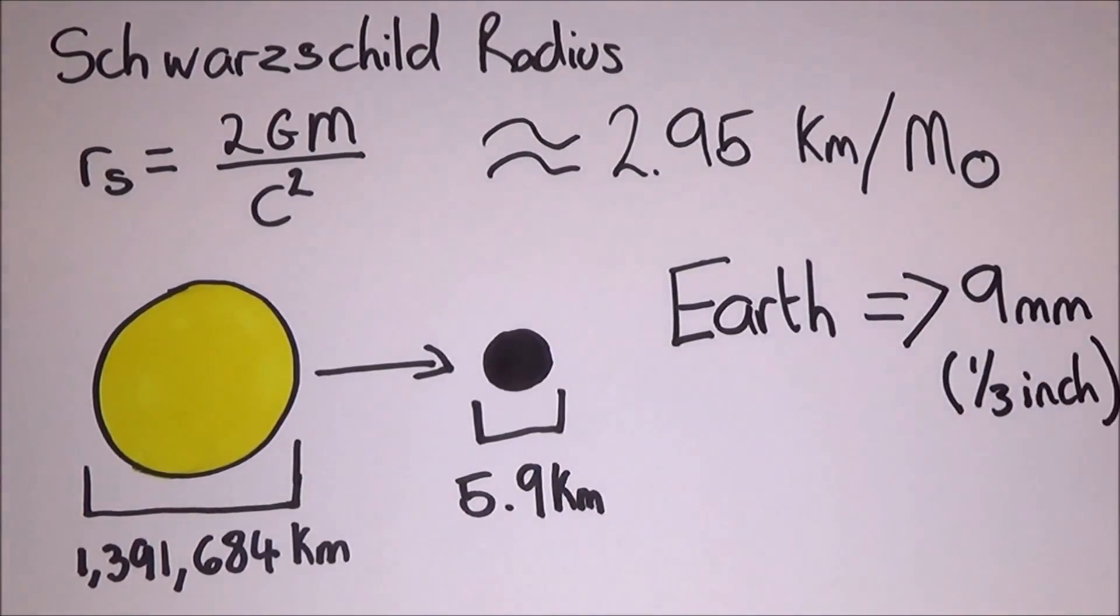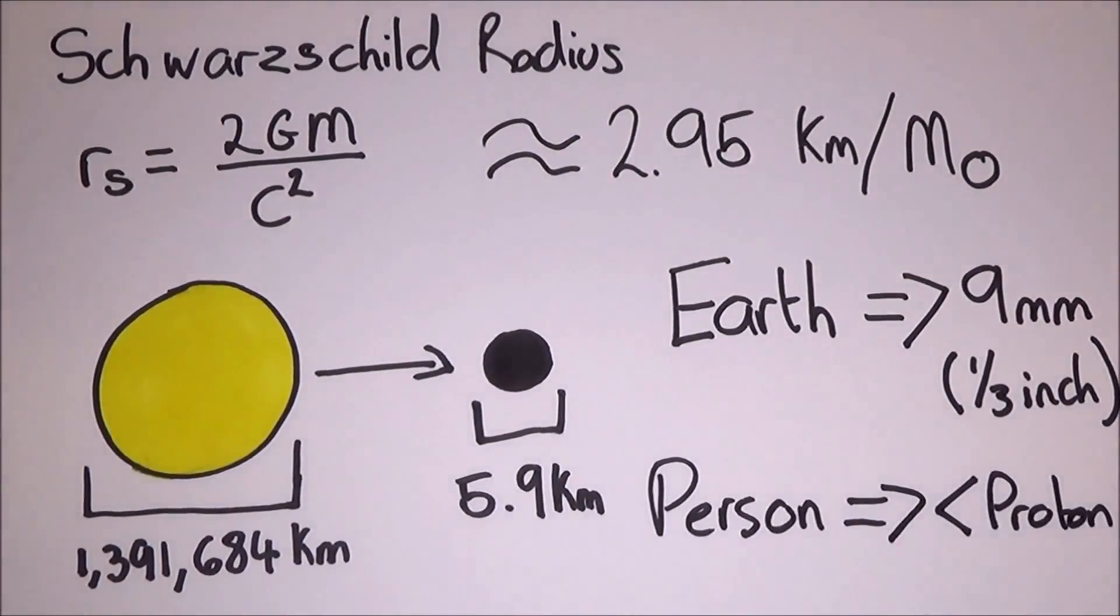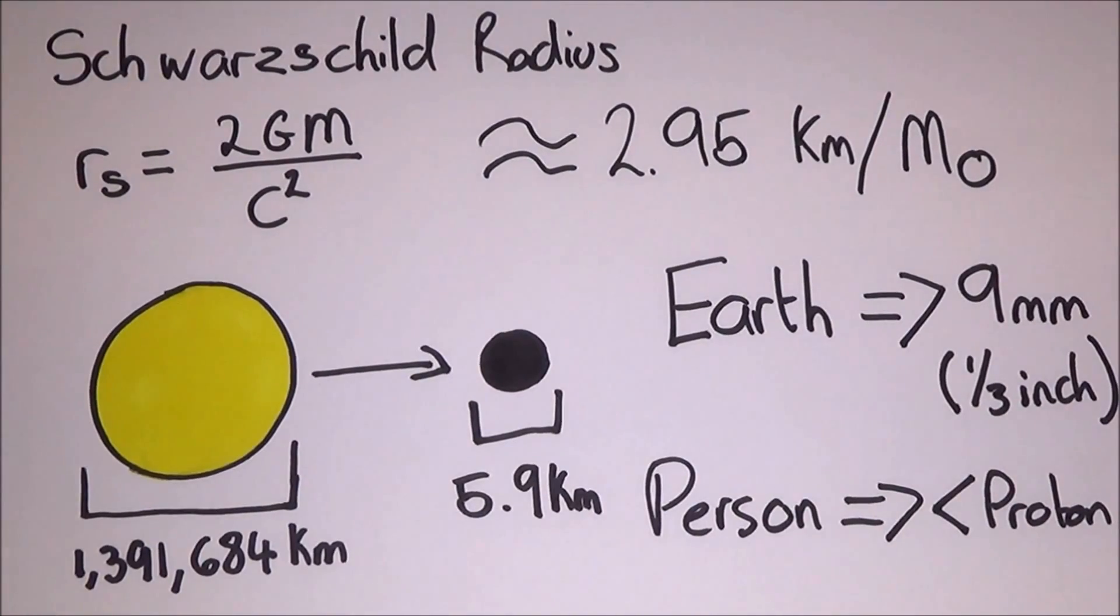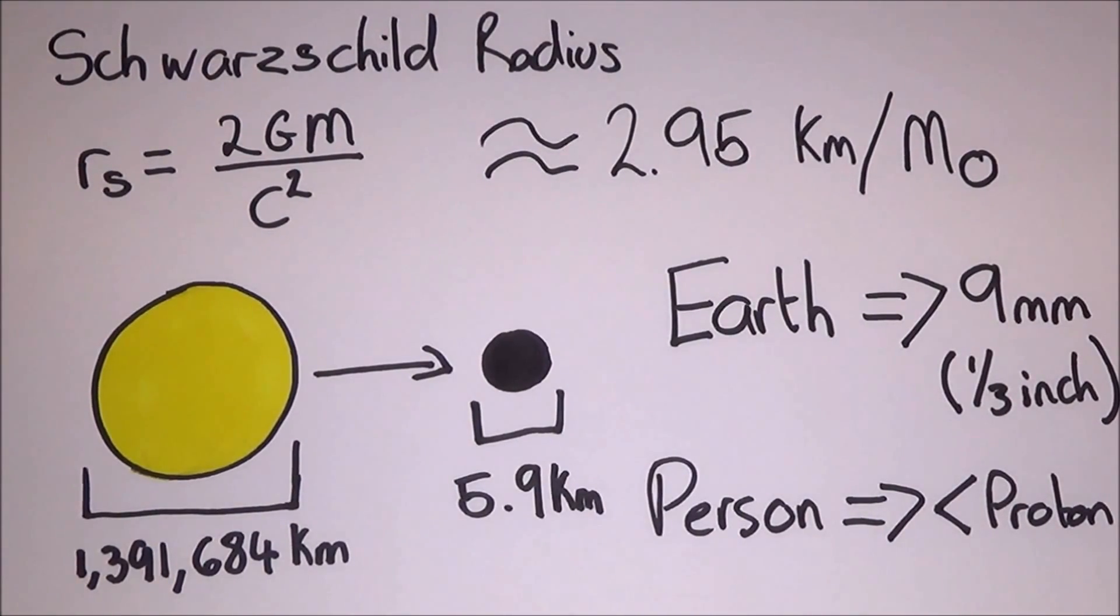But more interestingly, the Earth would have to be squished to about 9mm or a third of an inch, and a person would have to be squished smaller than a proton.